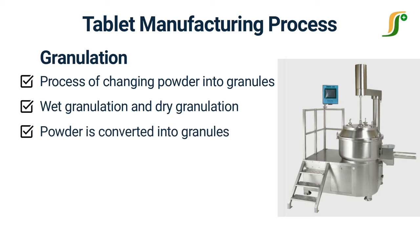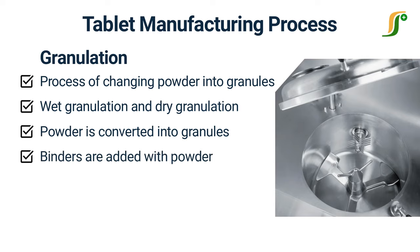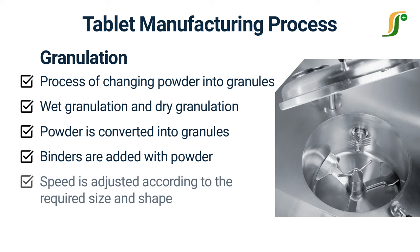In dry granulation, no liquid is used and granules are formed without the use of liquids. The selection of the granulation method depends upon the type of raw material and the properties of the final product required. Rapid mixer granulator is the main equipment used for granulation. Binders are added with powder in the granulator, and the speed of the granulator is adjusted according to the required size and shape of the granules.